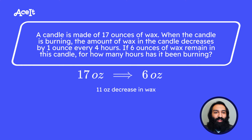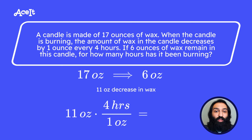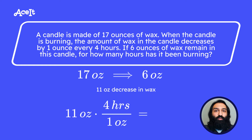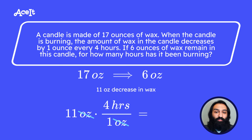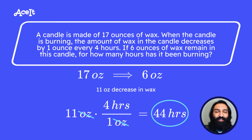So now we need to figure out how much time it takes to lose 11 ounces if the wax decreases 1 ounce every 4 hours. We set up the equation so the ounces cancel out and only hours remain, by taking 11 ounces and multiplying by 4 hours over 1 ounce. Once the ounces cancel out, 11 × 4 hours = 44 hours. It takes 44 hours to decrease 11 ounces of wax.